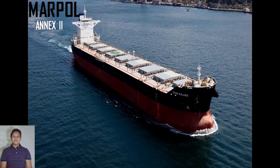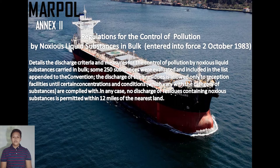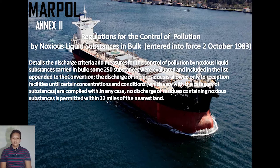Annex 2 — Regulations for the Control of Pollution by Noxious Liquid Substances in Bulk — entered into force 2 October 1983. It details the discharge criteria and measures for the control of pollution by noxious liquid substances carried in bulk. Some 250 substances were evaluated and included in the list appended to the convention. The discharge of their residues is allowed only to reception facilities until certain concentrations and conditions, which vary with the category of substance, are complied with. In any case, no discharge of residues containing noxious substances is permitted within 12 miles of the nearest land.